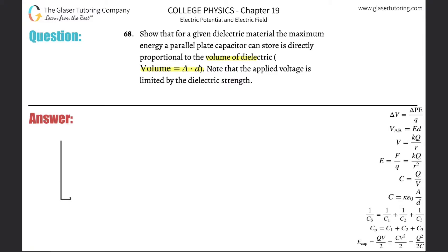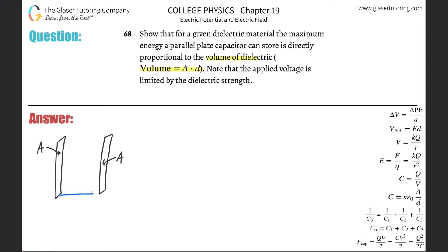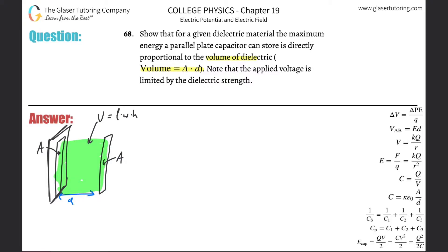When dealing with this, it's really a three-dimensional type of problem. Here's one of the plates with a certain area, here's another plate with the same area, and then the distance between them is d. If you imagine this in three dimensions, there's going to be some material filling in that area and distance — the material in green here is the dielectric material, which has a certain volume. Volume is length times width times height, and the width essentially is represented as the area — that would be the plate.